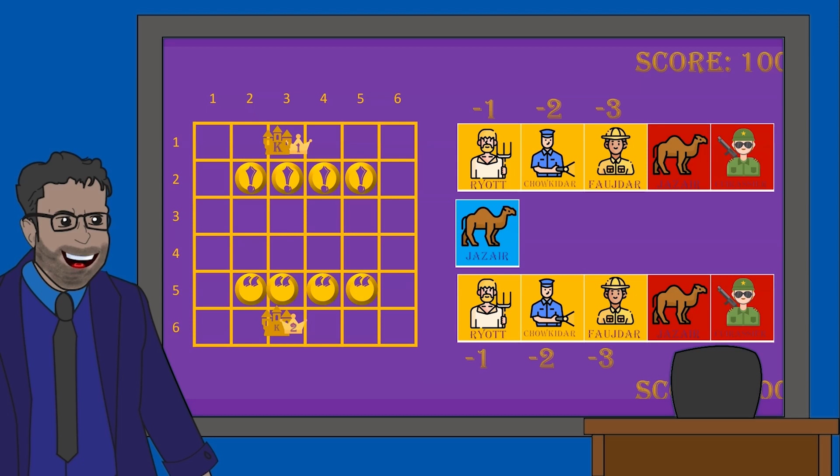Of course, the game ends when a Mirza is in the same place as the opponent's Kotler, or they capture the opponent's Mirza. Whoever has the highest score at this point wins the game.